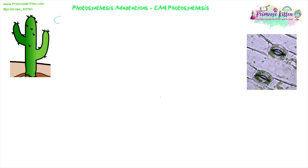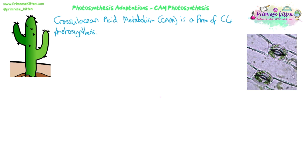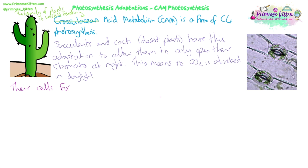There is another form of C4 photosynthesis called CAM photosynthesis. The full name is Crassulacean acid metabolism. It's named Crassulacean because that's the family of plants in which it was first identified, and it's mostly used by succulents, cacti, and desert plants. This adaptation allows them to only need to open their stomata at night time, so they do not absorb any carbon dioxide during the day. Their cells fix carbon dioxide at night using PEP carboxylase and convert it into malate, also known as malic acid — which is where the 'acid' in the name comes from.